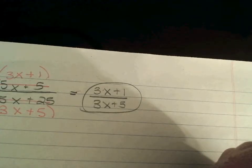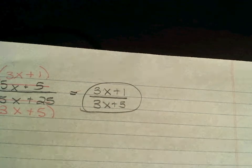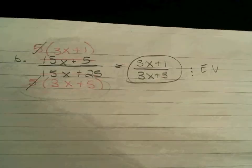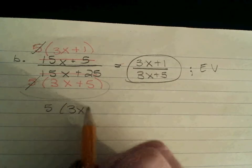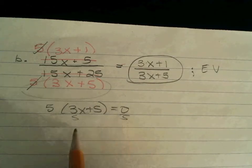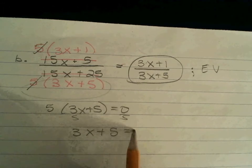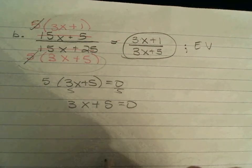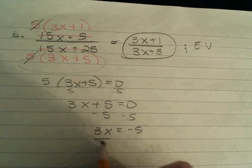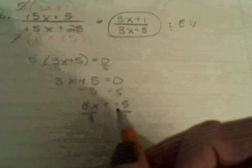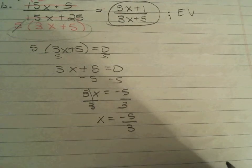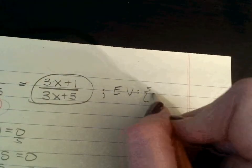So, what's next? The excluded value. Or values, yep. What makes this denominator equal 0? So, what makes 5 times 3x plus 5 equals 0? Divide by 5. We still have 0. So, first subtract the 5. Then divide by 3. So, then x equals negative 5 thirds. So, my excluded value is negative 5 thirds.